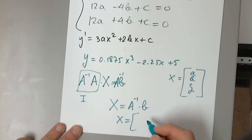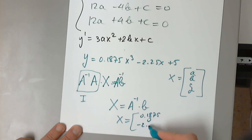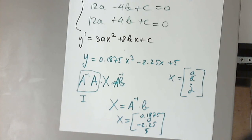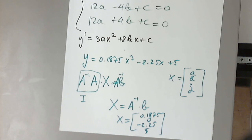So the function is approximately 0.1875 x cubed minus 2.25x plus 5. This is the only function that goes through the given points and has a horizontal tangent at those points. Things can go wrong if matrix A is not invertible — you'll get an error. When the determinant of the matrix is zero, the inverse does not exist. You have to use a different method.